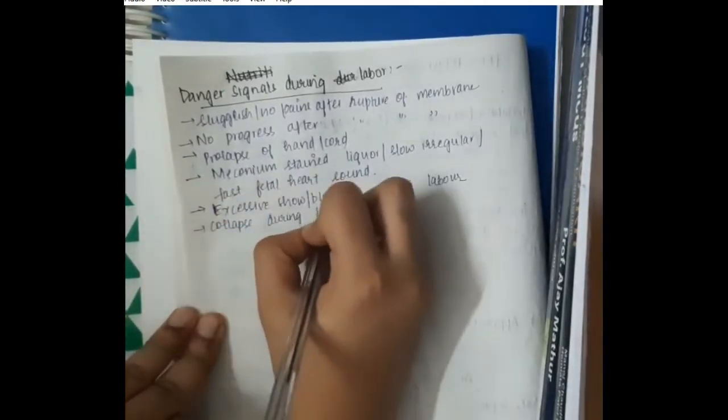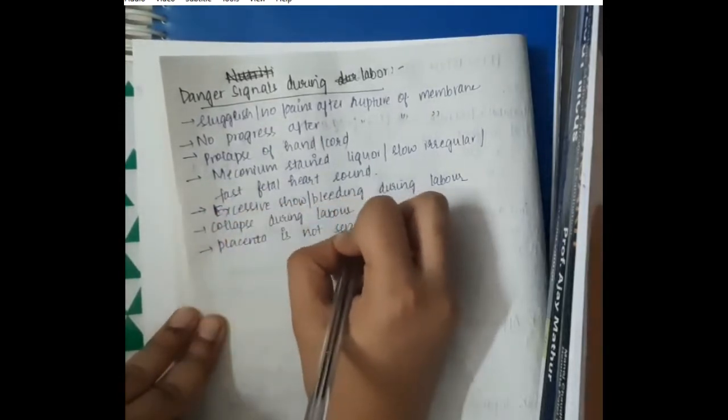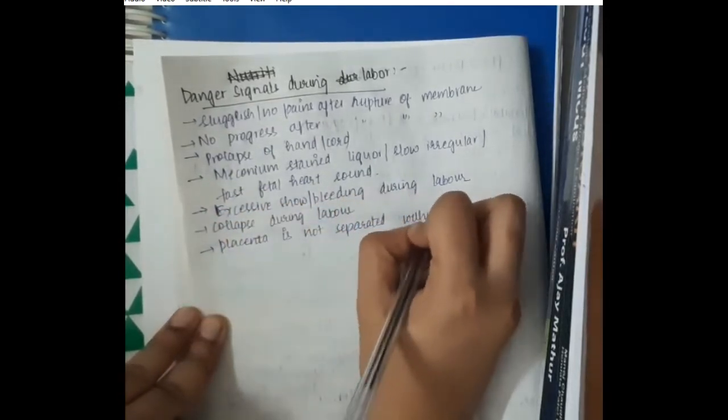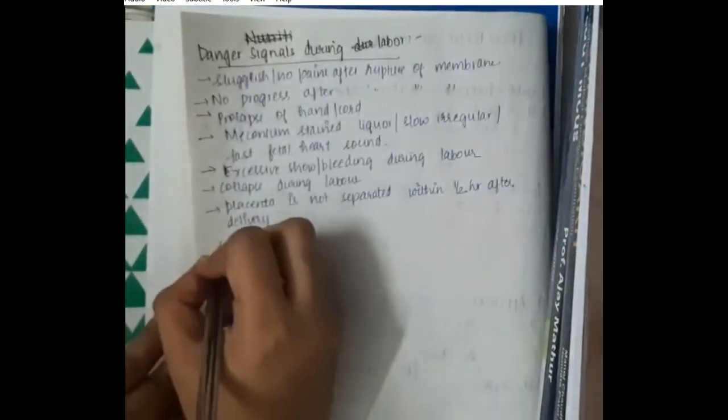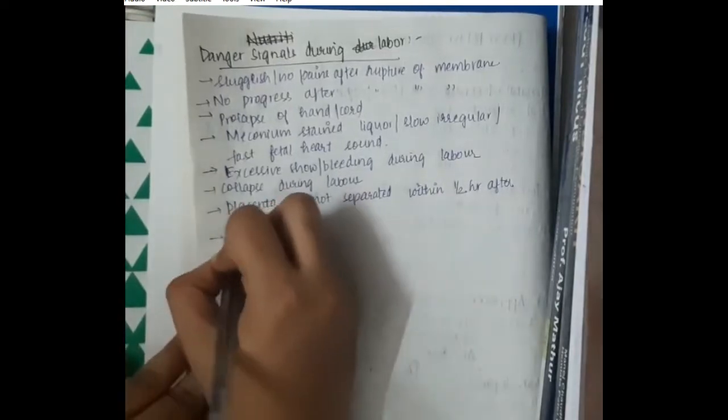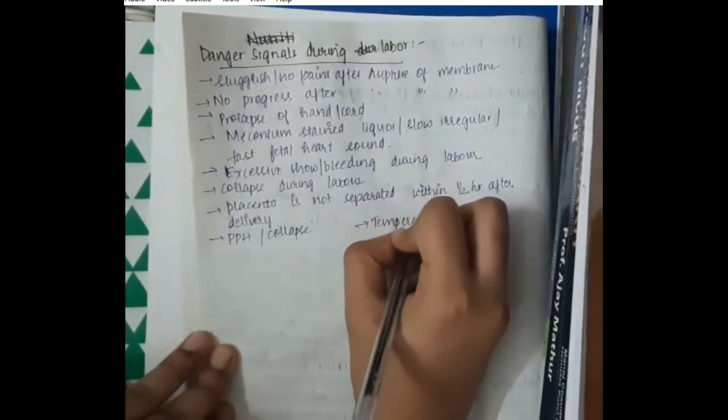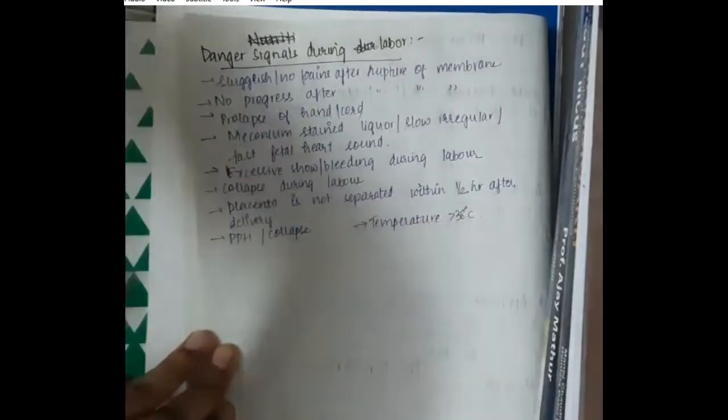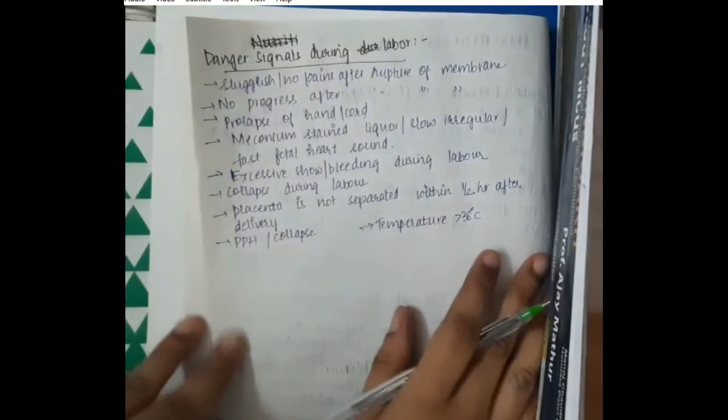It is a danger signal. Collapse during labor can be due to any type of shock. Placenta is not separated within half an hour after delivery. This will indicate that there can be morbidly adherent placenta like placenta acreta, increta or percreta. Postpartum hemorrhage or collapse and temperature more than 38 degrees celsius. All these are danger signals during labor.